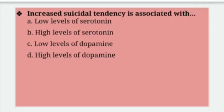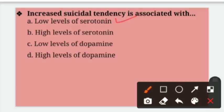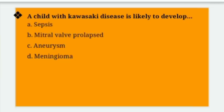Suicidal tendency is associated with — suicidal tendency kis ke saath associated rahati hai? Options: Low levels of serotonin, High levels of serotonin, Low levels of dopamine, High levels of dopamine. Right answer is option A — low levels of serotonin. It leads to depression and suicidal behavior. High levels of serotonin cause anxiety.